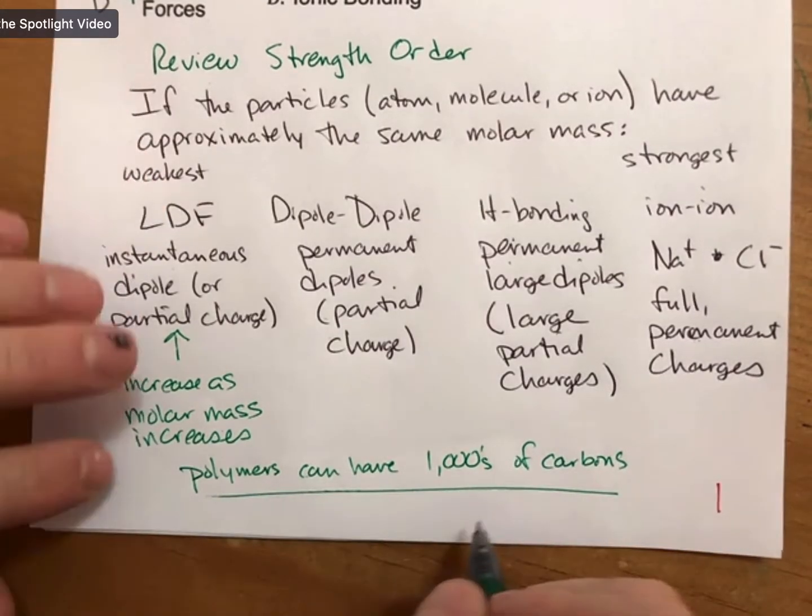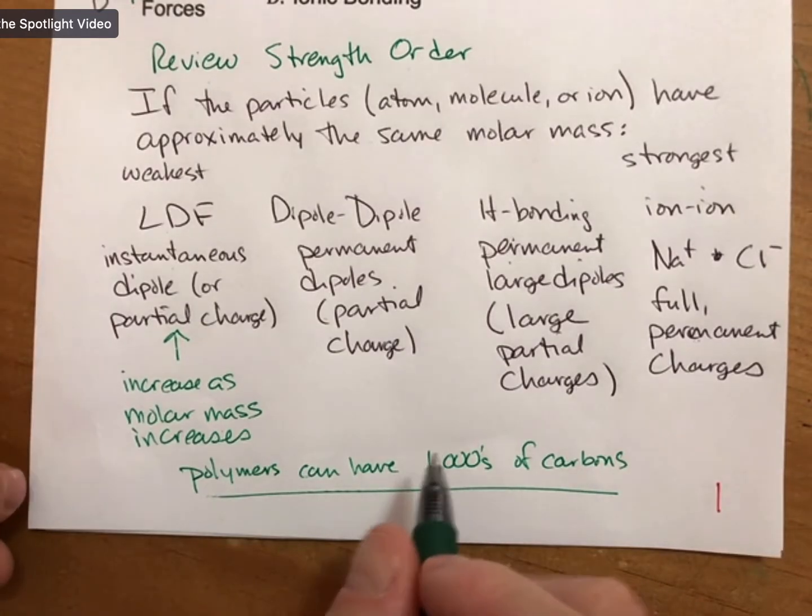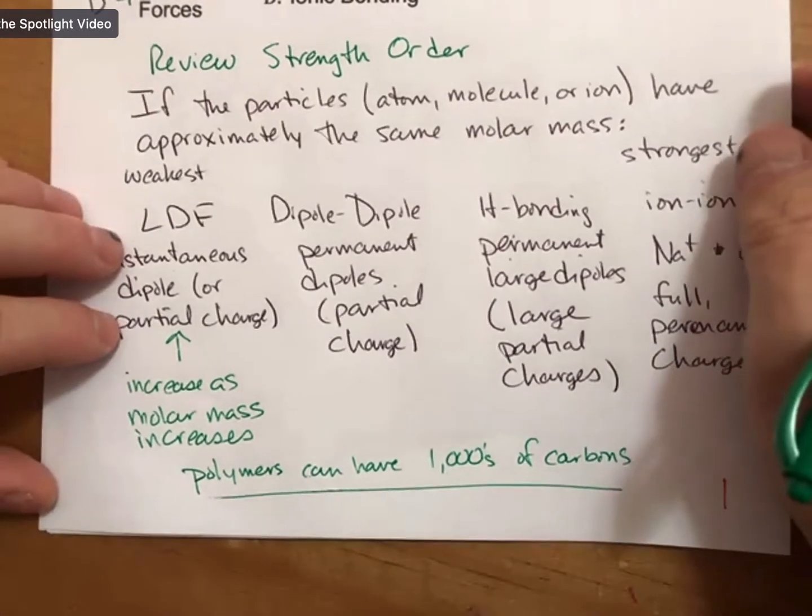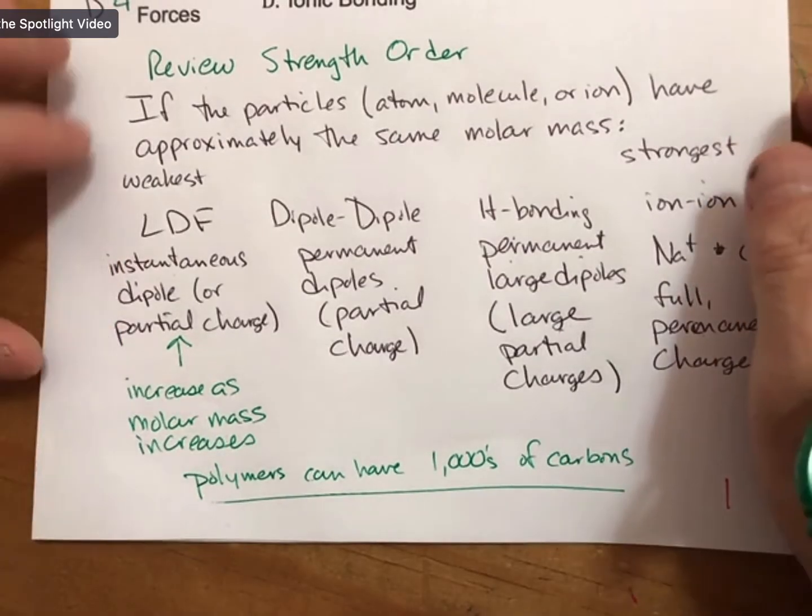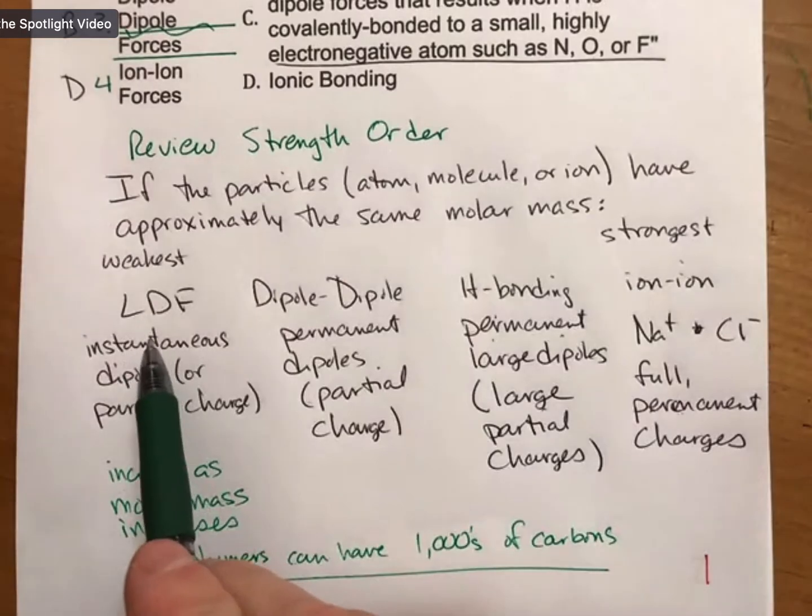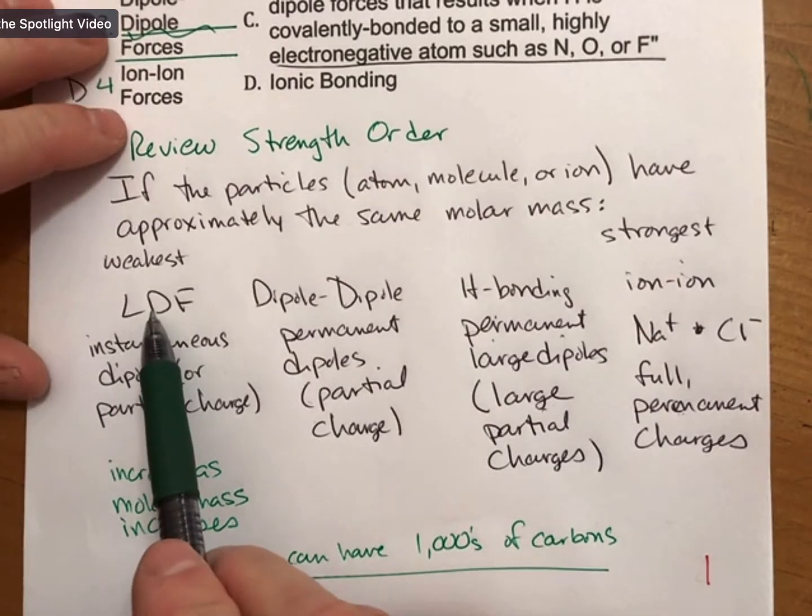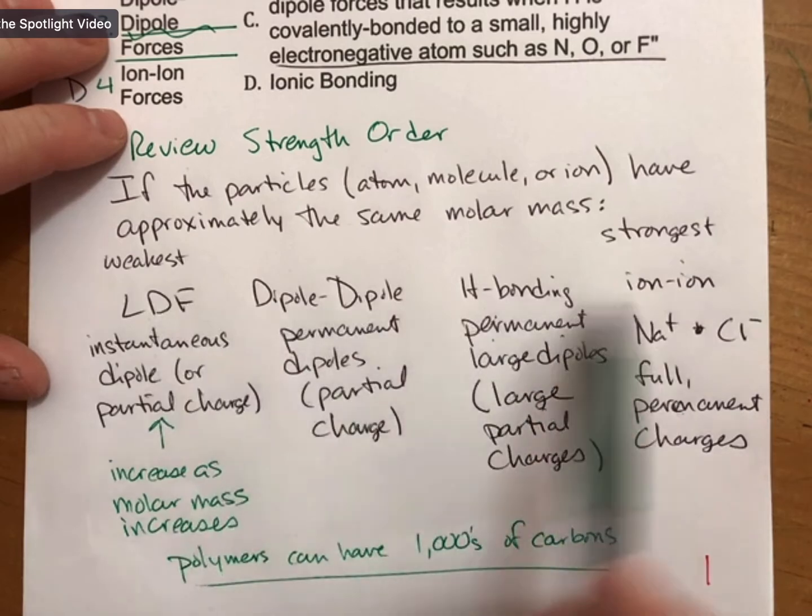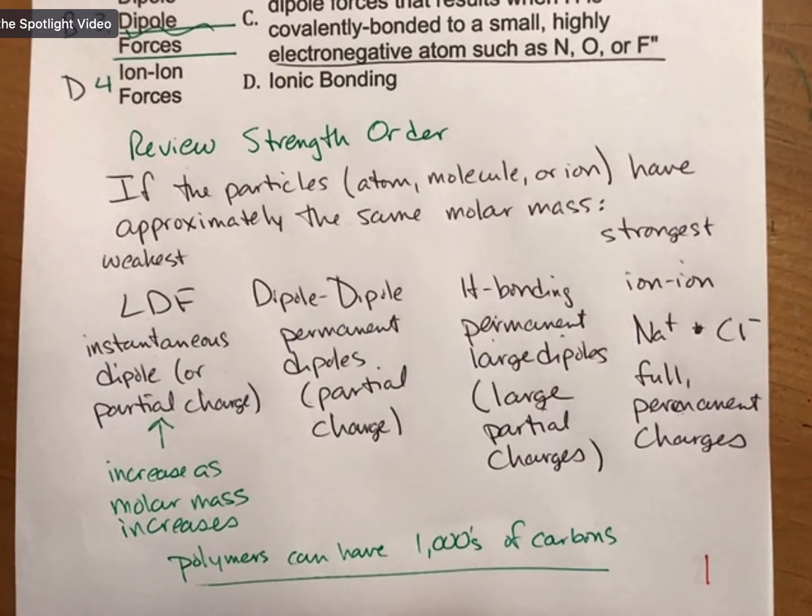The big thing you need to think of when you do LDF and molar mass is when you talk about something called polymers. Polymers can have thousands of carbons, so they can have very large molar masses. They're sort of a separate thing here. If you come to office hours I'm happy to talk about polymers, but they're not part of the material we're going to cover for this class. But if you look over the questions you'll see as much as possible I'll try and keep the molar mass the same.